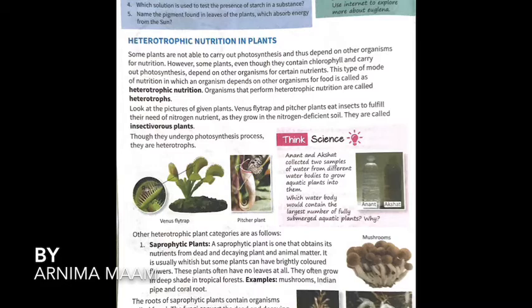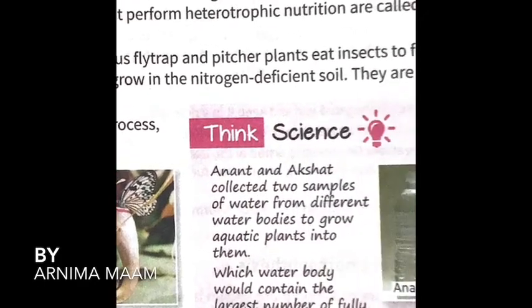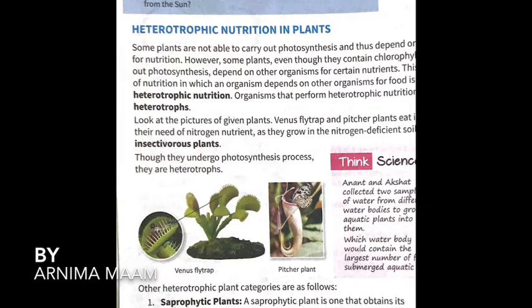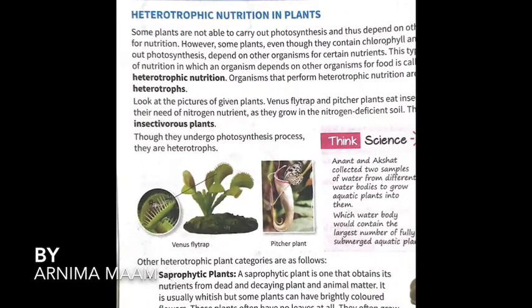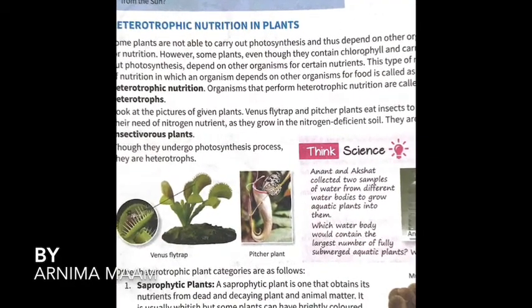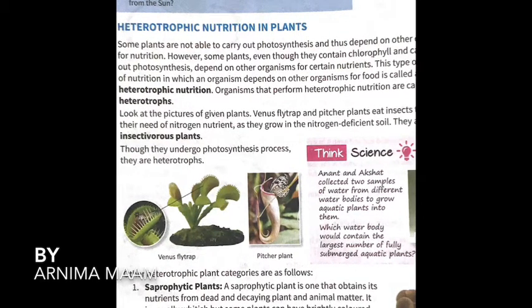Look at the picture of the given plant — that is Venus flytrap. You can see here Venus flytrap and pitcher plant eat insects to fulfill their need for nitrogen. Both pitcher plant and Venus flytrap depend on other organisms for certain types of nutrition — specifically nitrogen — as they grow in nitrogen-deficient soil.